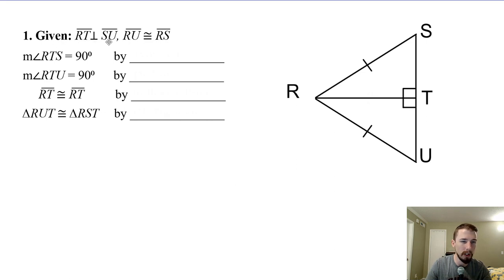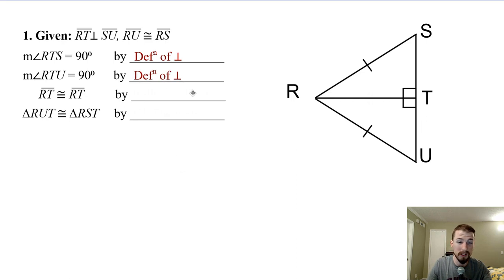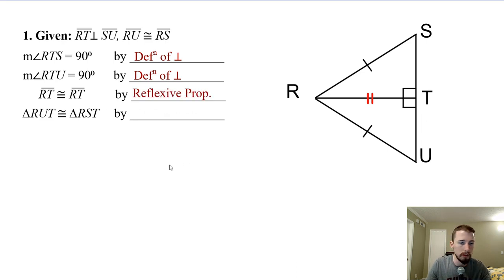Number one: given that RT is perpendicular to SU, which means they intersect at a right angle, so RT and SU are going to make right angles. And RU is congruent to RS, which is already marked in the diagram. The first part says angle RTS is going to be a right angle because they told us these are perpendicular — that's from the definition of perpendicular. Same thing with RTU — RTU is also going to be a right angle because of the definition of perpendicular. Then RT is congruent to itself. This RT is the same length for the top triangle as it is for the bottom one — anything congruent to itself is by the reflexive property.